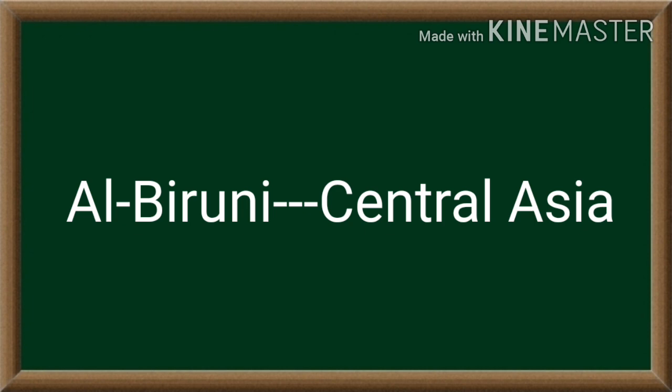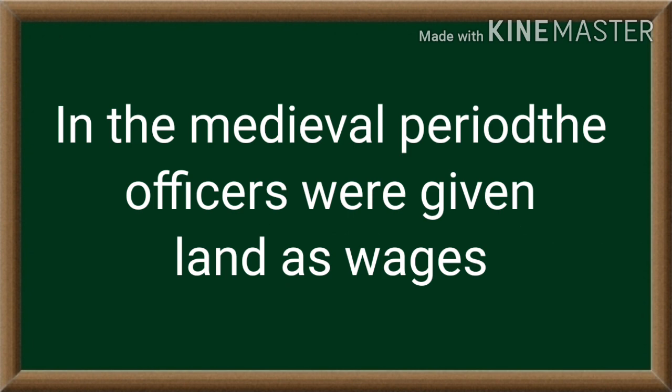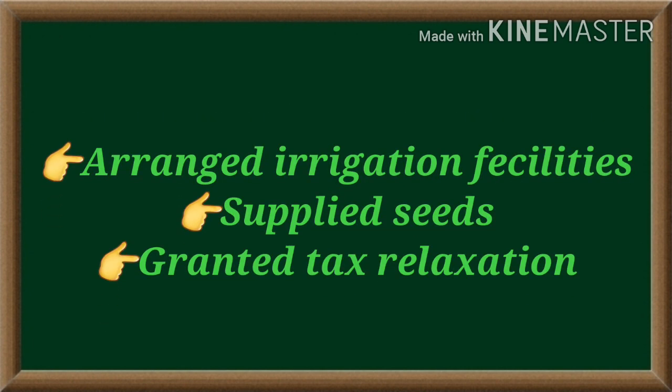What are the occupations and taxes mentioned in this travelogue? Regarding agriculture: in this period there was plenty of cultivable land in India that was kept uncultivated. Those who first cultivated such land were granted its ownership. The hardworking farmers tried to win the ownership of such land. The steps taken by rulers for the progress of agriculture included arranging education facilities, supplying seeds, and granting tax relaxation.